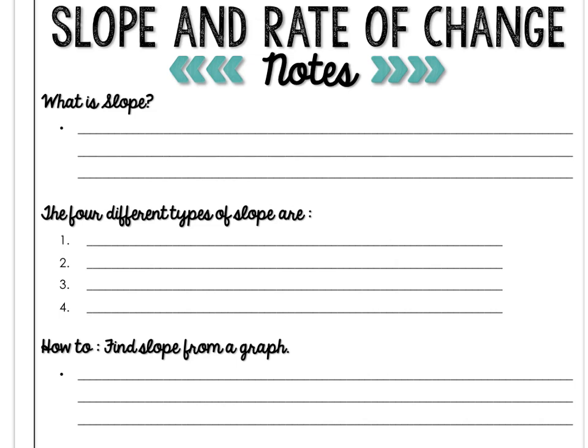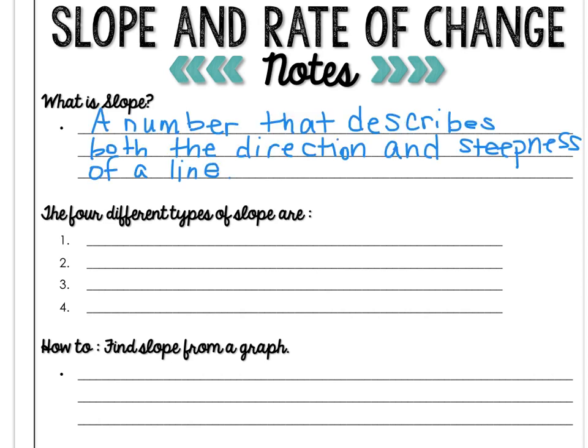Today's lesson is on slope and rate of change. What is slope? Slope is a number that describes both the direction and steepness of a line. In other words, the rate of change of that line.